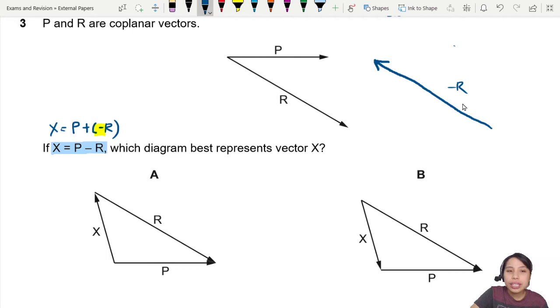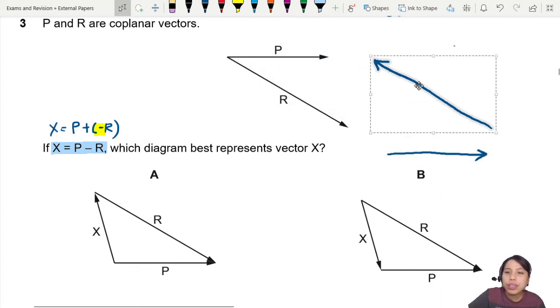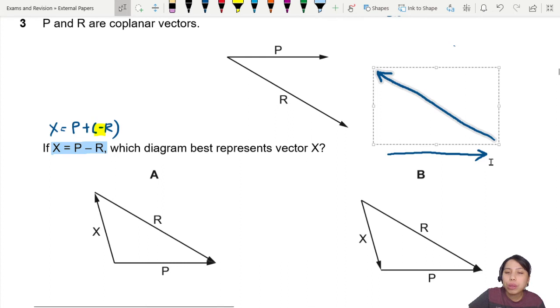Now how do we find out what is x? x is P minus R. So I need to think of ways to do P minus R. P is going to be this one. I'm going to redraw it so I can move it around.